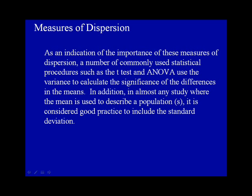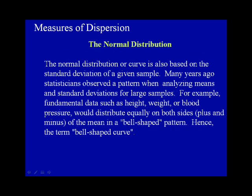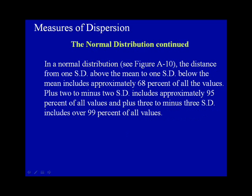The normal distribution, or curve, is also based on the standard deviation of a given sample. Many years ago, statisticians observed the pattern when analyzing means and standard deviations for large samples. For example, fundamental data such as height, weight, or blood pressure would distribute equally on both sides, plus and minus, of the mean in a bell-shaped pattern — hence the term bell-shaped curve.